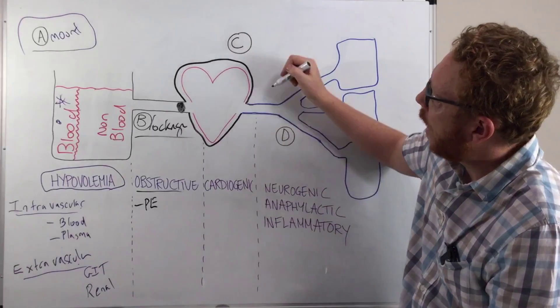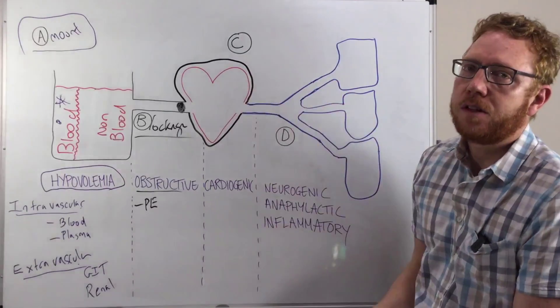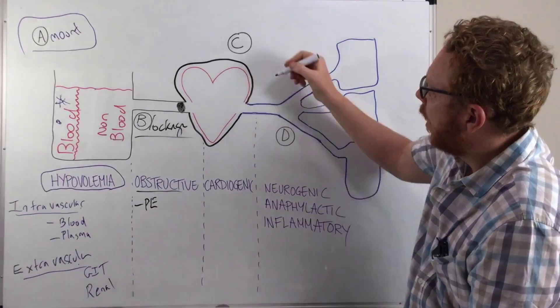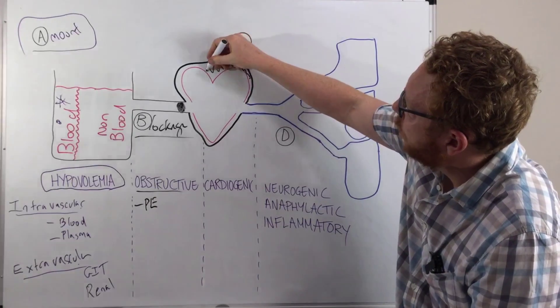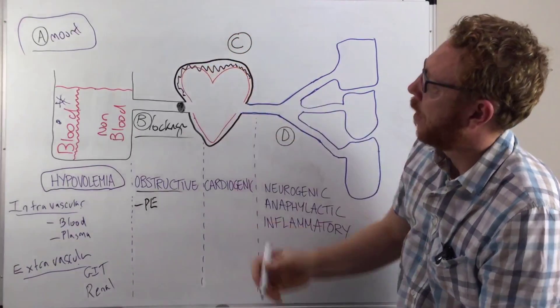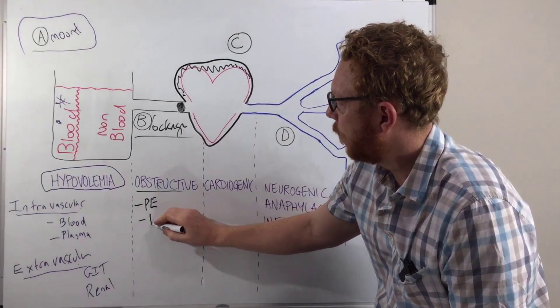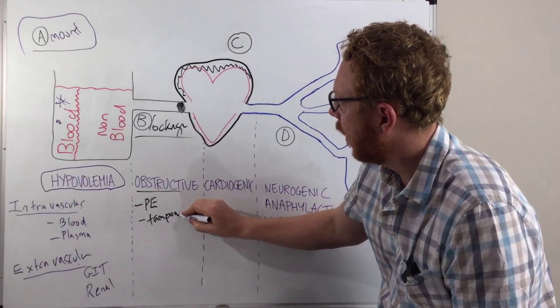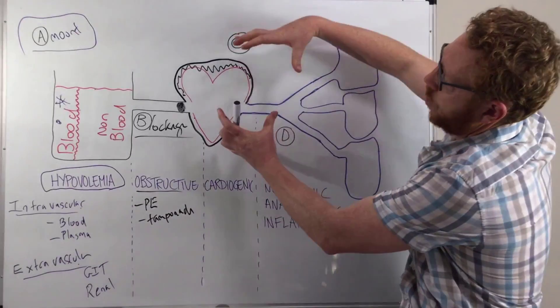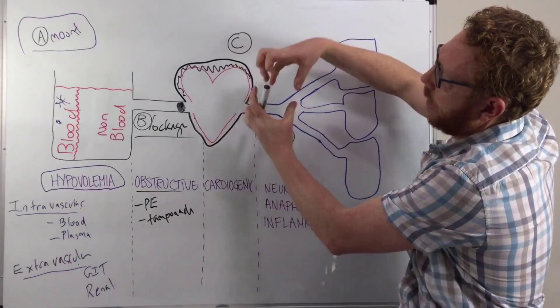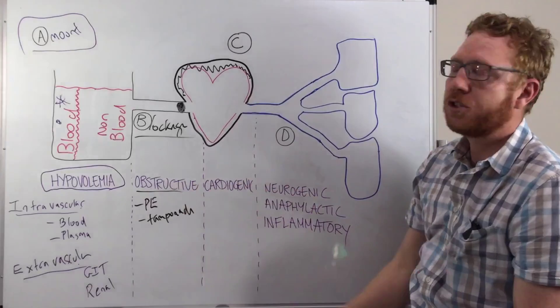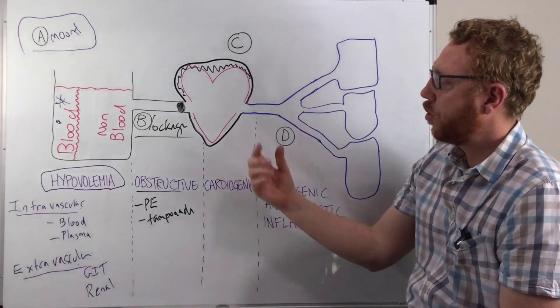Another one would be if you had a breakage of a blood vessel around the heart, these are the coronary vessels, and blood filled the space, the pericardium. This is called a tamponade, a cardiac tamponade. So this would essentially restrict the heart, and the heart can't fill anymore. That would also cause an obstruction form of shock.